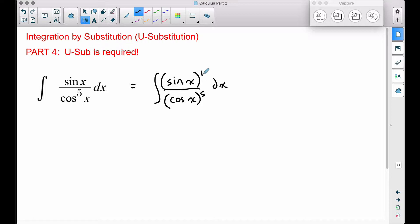Now, sine has an understood exponent of 1, but notice if we let U be equal to just the cosine of X, not cosine to the fifth, just cosine of X, if we find the derivative of cosine of X, that's going to be negative sine of X DX.